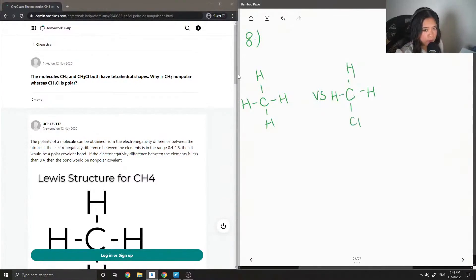Like the question mentioned, they both have tetrahedral shapes, but because chlorine is more electronegative and the hydrogens aren't electronegative enough to balance out that dipole moment, this makes the molecule polar.